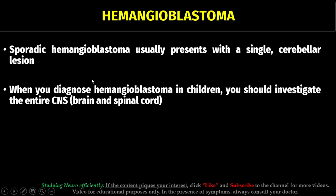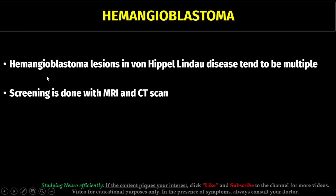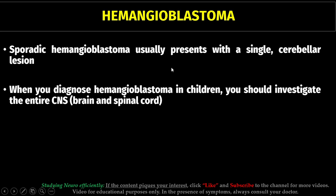When we diagnose hemangioblastoma in children, we should investigate the entire CNS, because the case may have an association between hemangioblastoma and von Hippel-Lindau disease. Hemangioblastoma lesions in von Hippel-Lindau disease tend to be multiple, whereas sporadic hemangioblastoma tends to present as a single lesion.